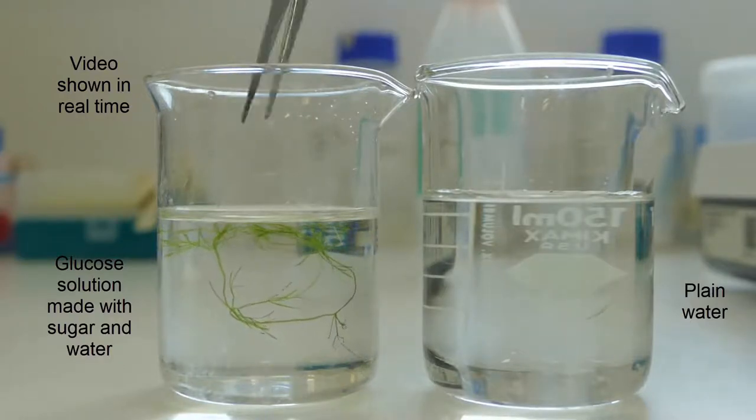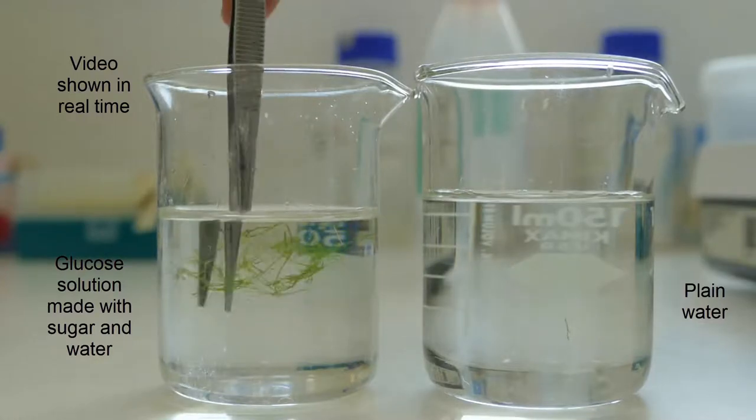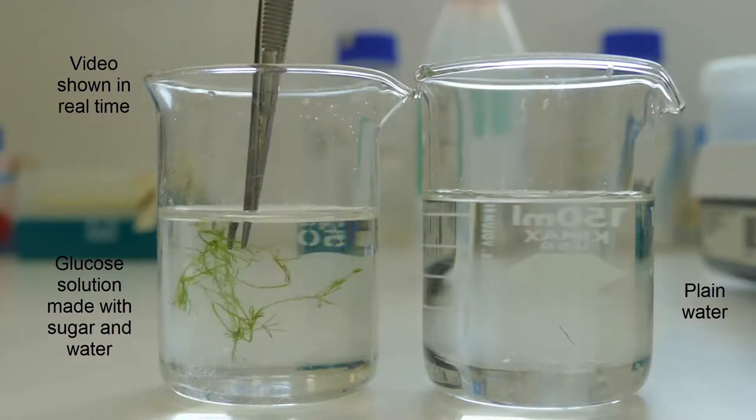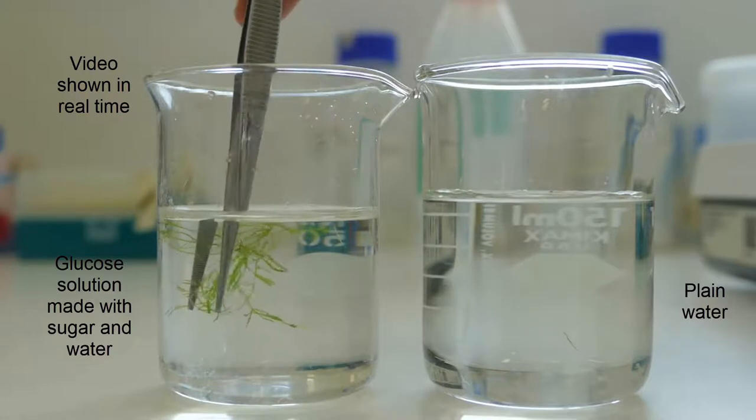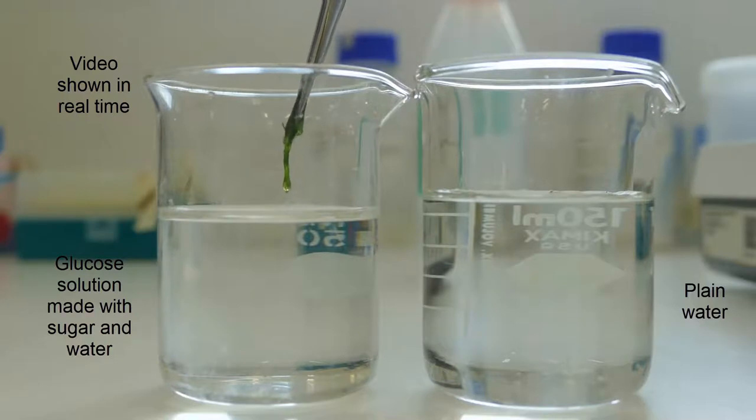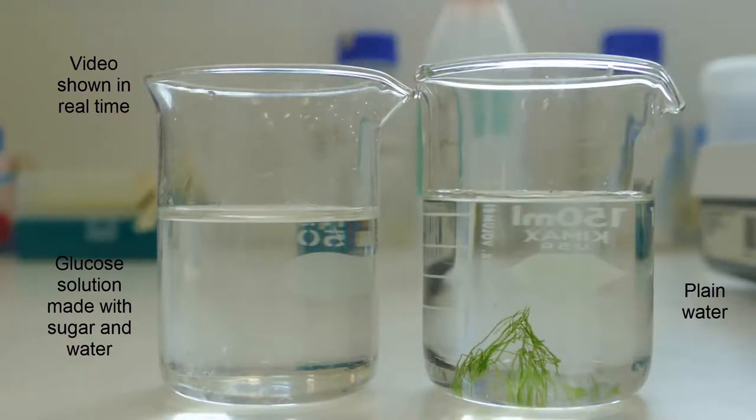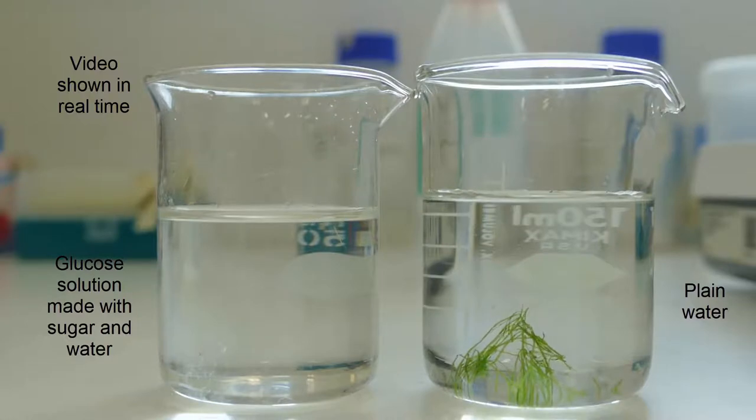The osmotic potential of the sugar solution is more negative than the osmotic potential in the cells, so water moves out of the cells into the sugar solution. This causes the turgor pressure of the nitella cells to drop and the algae becomes limp. When we move the nitella back into the beaker with just water,